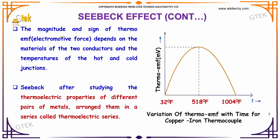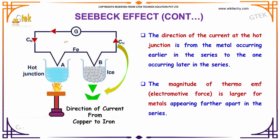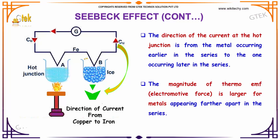The magnitude and sign of thermoelectric force depends on the material of the two conductors and the temperature of the hot and cold junction. Seebeck, after studying the thermoelectric properties of different pairs of metals, arranged them in a thermoelectric series. The direction of current at the hot junction is from the metal occurring earlier in the series to the one occurring later. The magnitude of thermoelectric EMF is larger for metals appearing farther apart in the series.